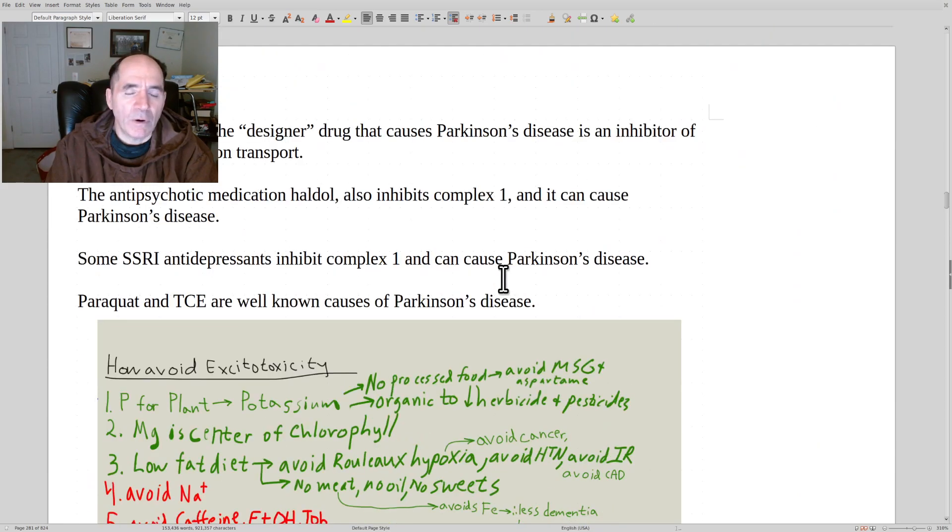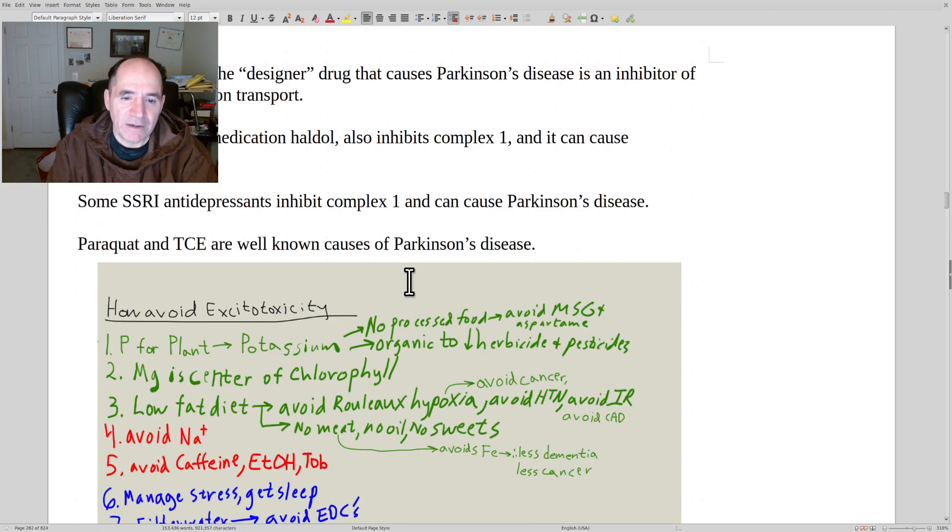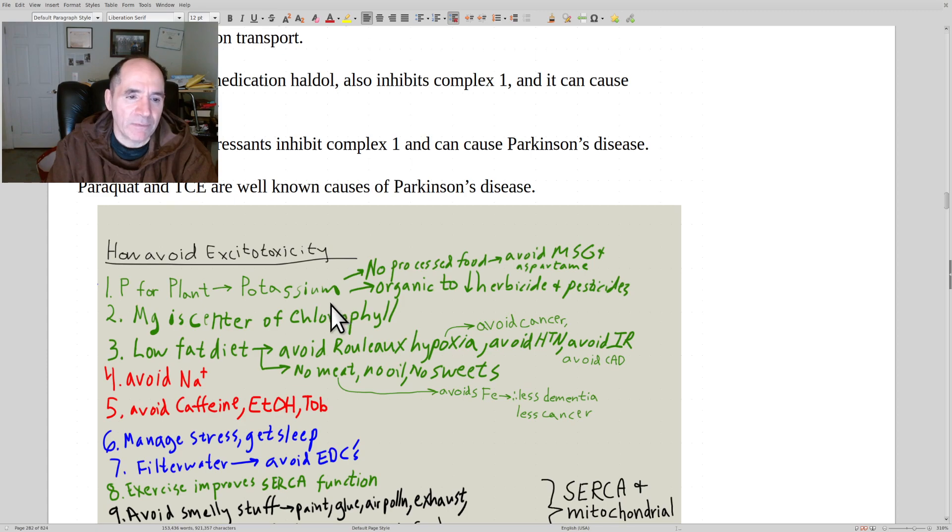There's other things too, like MPTP, a designer drug that causes Parkinson's disease, inhibits mitochondria complex one. So that's great. That's real reassuring. Things that inhibit the mitochondria, they're associated with causing diabetes, insulin resistance, they're associated with causing Parkinson's disease. That's pretty bad. And Haldol is another mitochondria inhibitor. That's an antipsychotic medicine, like to treat a schizophrenic. Some of these SSRIs not only inhibit mitochondria, they can also cause Parkinson's disease. Isn't that great? Paraquat can do it as well.